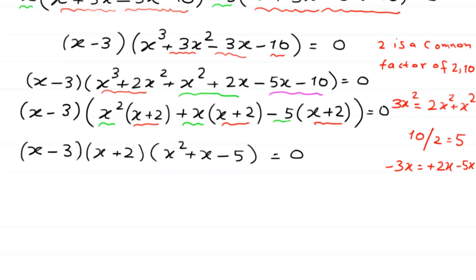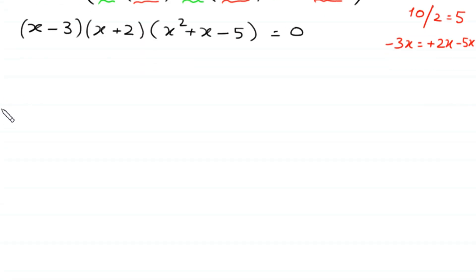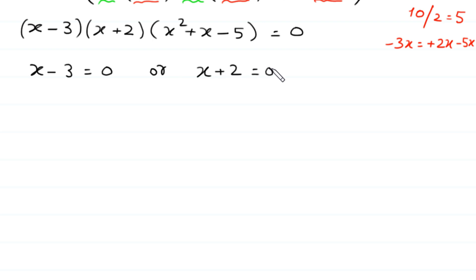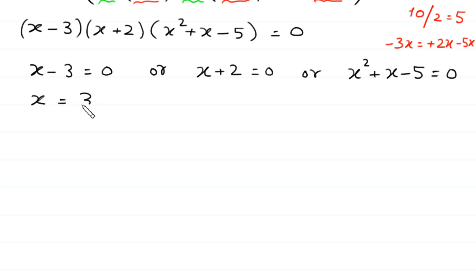Now the full factored form is (x minus 3)(x plus 2)(x squared plus x minus 5) equal to 0. Either x minus 3 equals 0, giving x equals 3 — the first solution — or x plus 2 equals 0, giving x equals negative 2 — the second solution — or x squared plus x minus 5 equals 0.